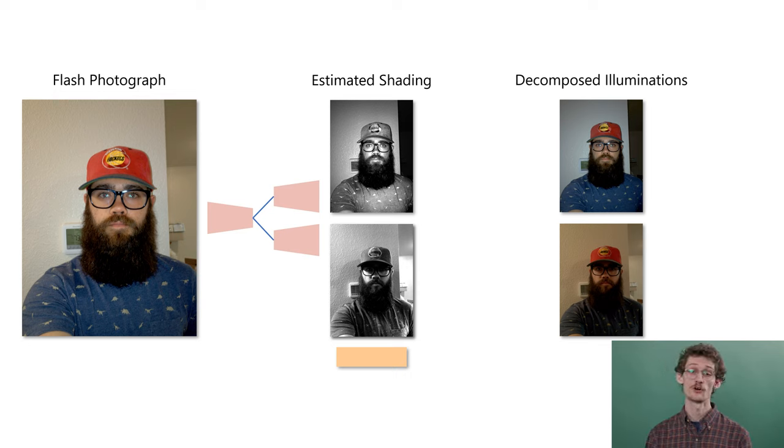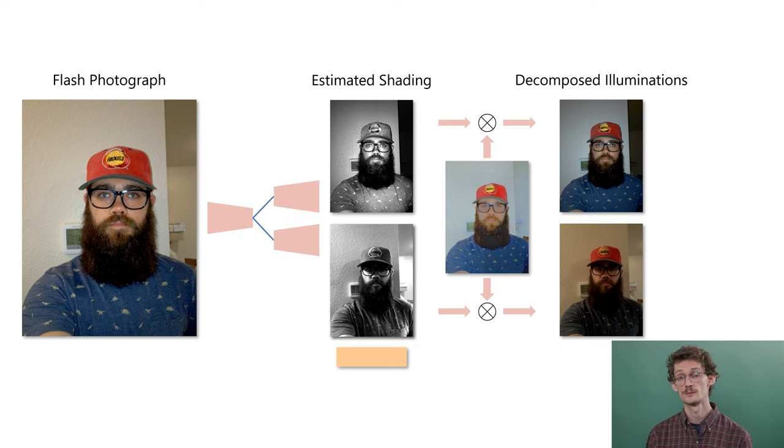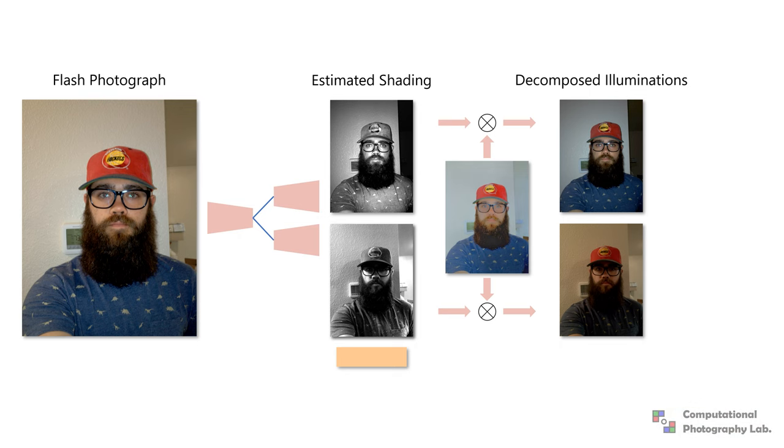These components account for all of the illumination in the scene, and the rest of the image content comes from albedo. Additionally, in order to provide geometrical context, we also feed the network estimated depth and surface normals.